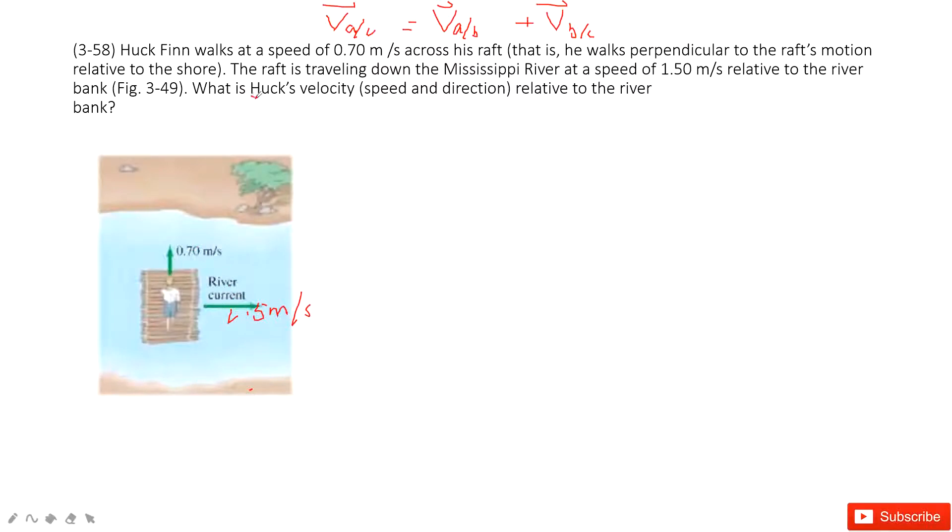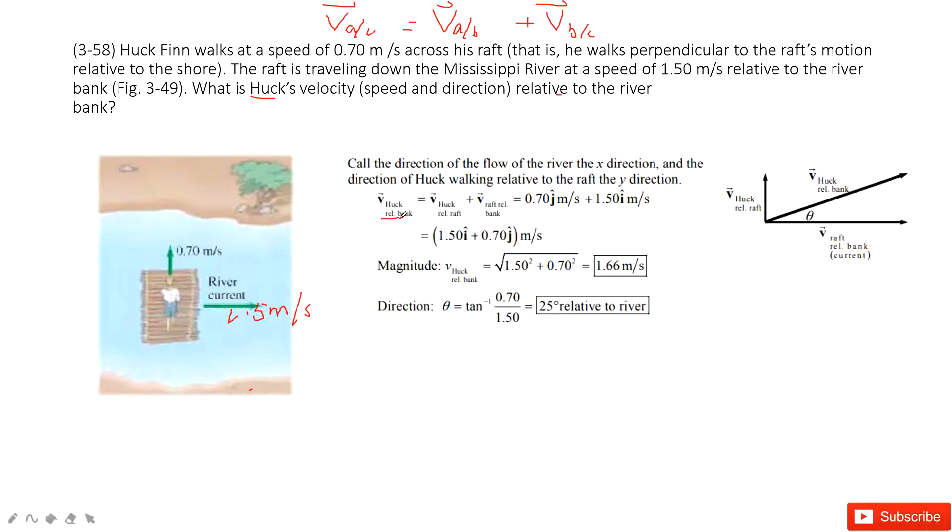The velocity of the person to the bank must be the velocity of the person to the raft plus the velocity of the raft to the bank. Do you agree? So we use this equation: the velocity of the person to the bank equals the velocity of the person to the raft plus the velocity of the raft to the bank.